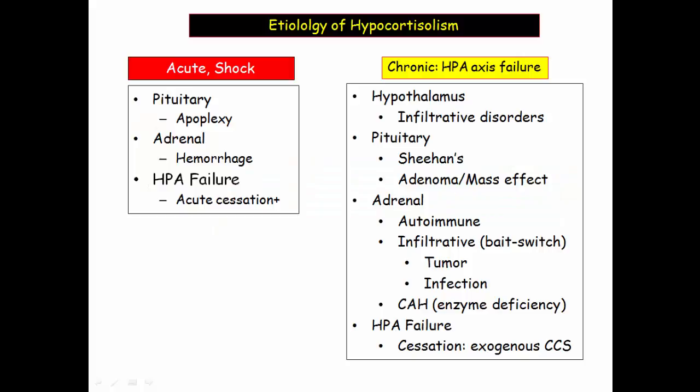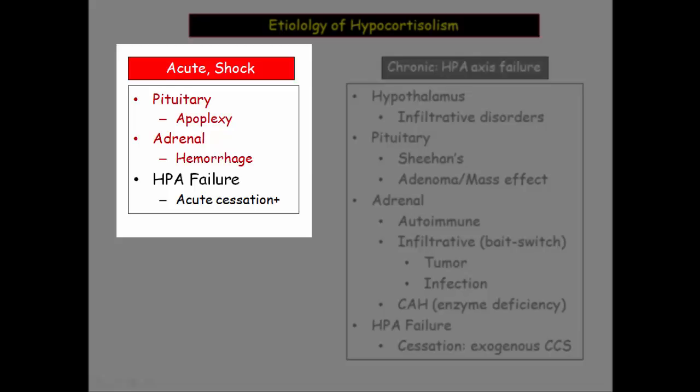It is prudent to begin this discussion by considering the causes of cortisol failure. These causes can be organized as acute or insidious. The patient with acute cortisol failure is almost always in shock on Step 1. This makes sense with pituitary hemorrhage, referred to as apoplexy, as well as acute hemorrhage into the adrenal gland. The circumstances leading to adrenal hemorrhage are independently associated with shock, such as sepsis from Neisseria meningitidis, so sepsis and acute adrenal failure would be expected to cause vasodilatory shock.